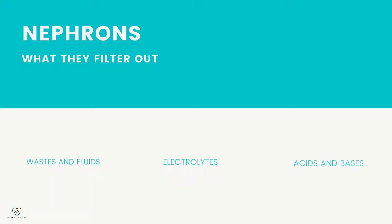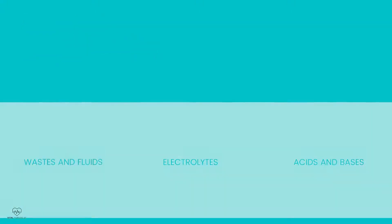What's very important to know is that inside the kidneys are nephrons. Nephrons filter out wastes, fluids, electrolytes, acids, and bases. Without this, our bodies would accumulate toxins and fluids, which makes us sick.